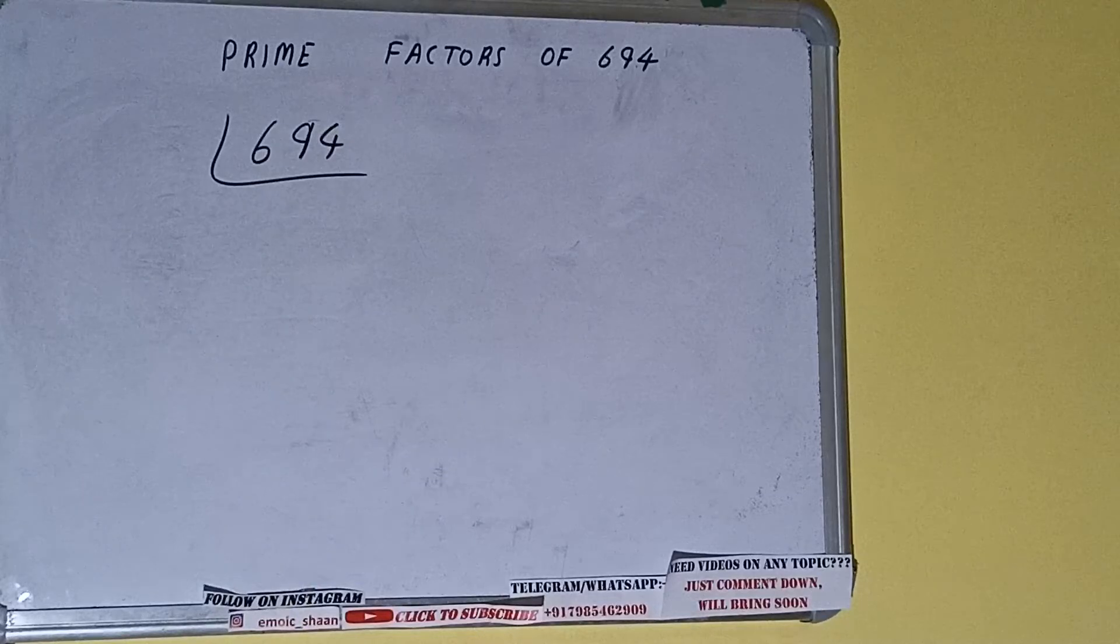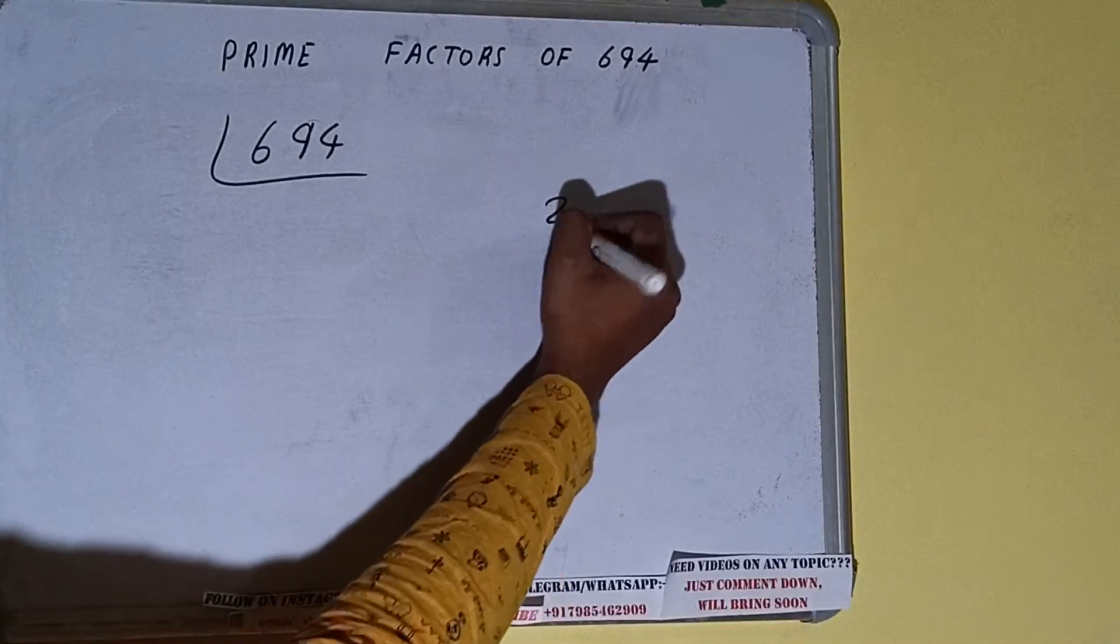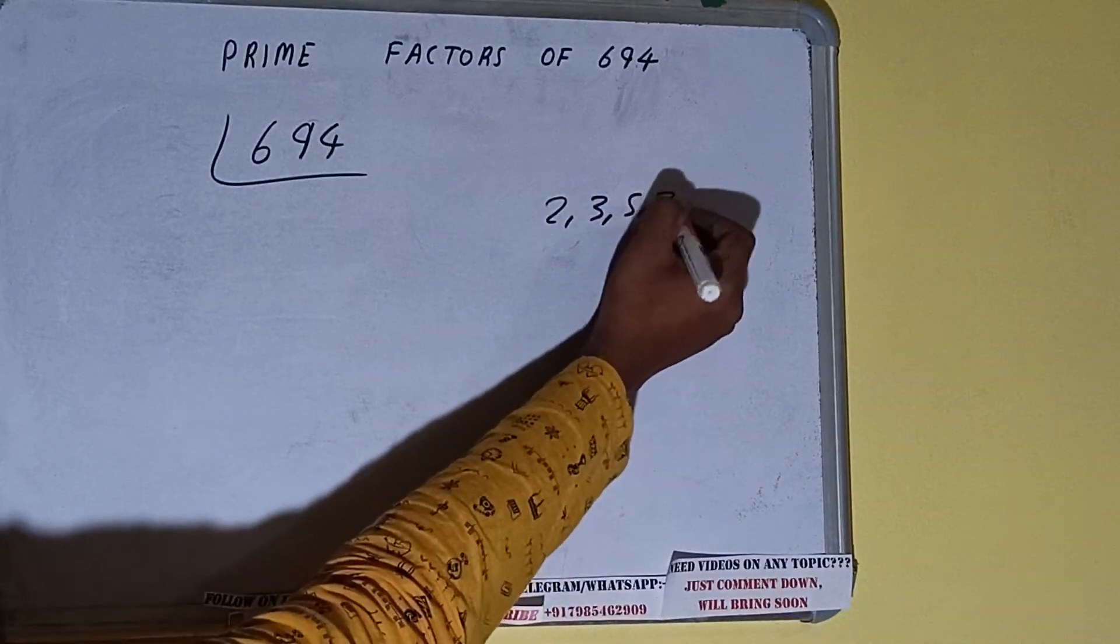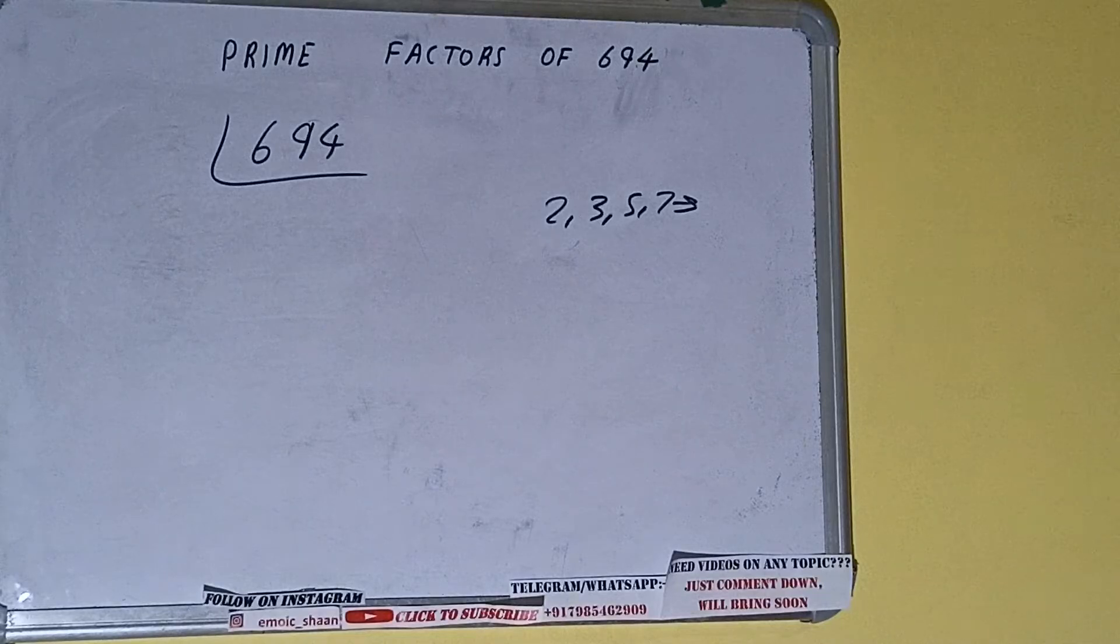The next thing we need to know about is what are prime numbers. So prime numbers are numbers that are divisible by 1 and the number itself, like 2, 3, 5, 7, and so on. Alright.